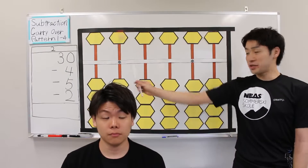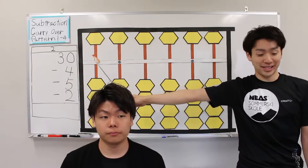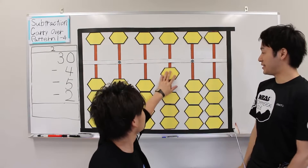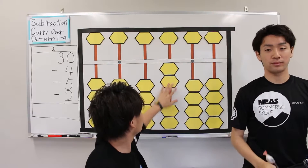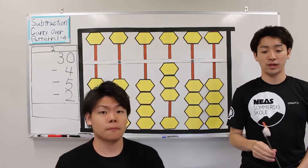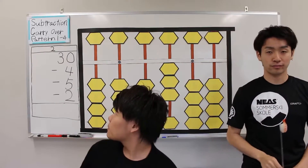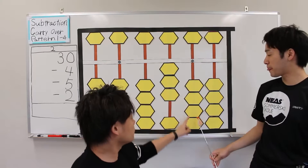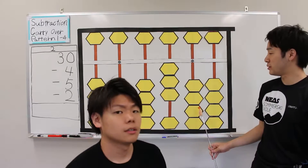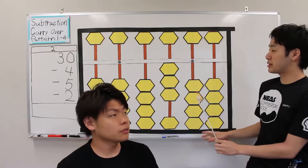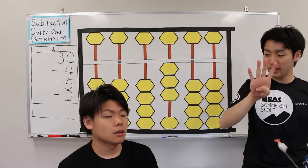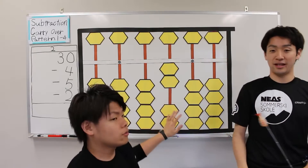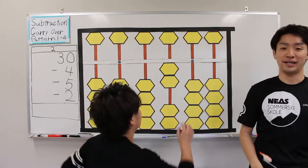Next question. First: plus 30. Okay, next: minus 4. Nothing? No. 2 subtract 4, subtract 10, and add 6. That's right.